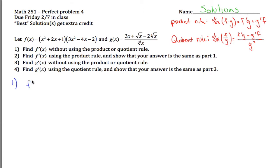For part 1, what I want to find is f prime of x. Here's f of x, so take that derivative. It looks like a product, so it's tempting to use the product rule. However, it says to do it without using the product rule.